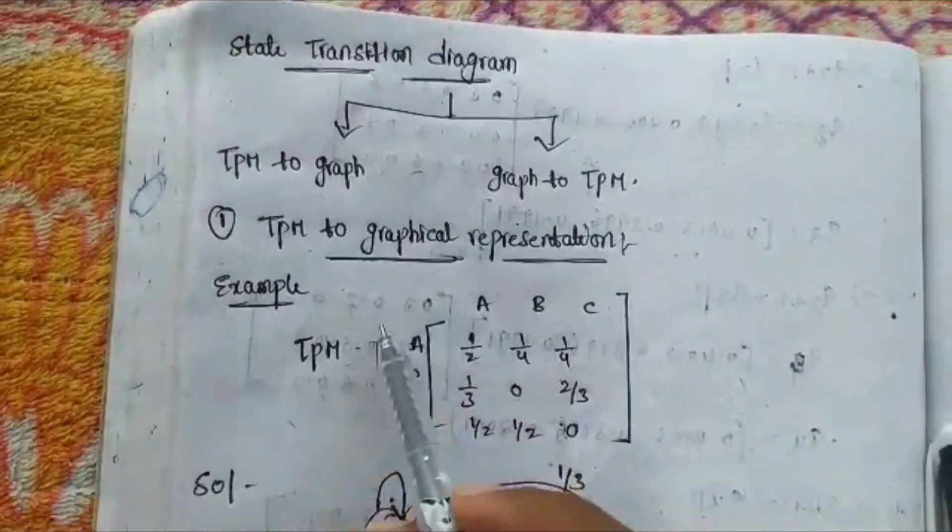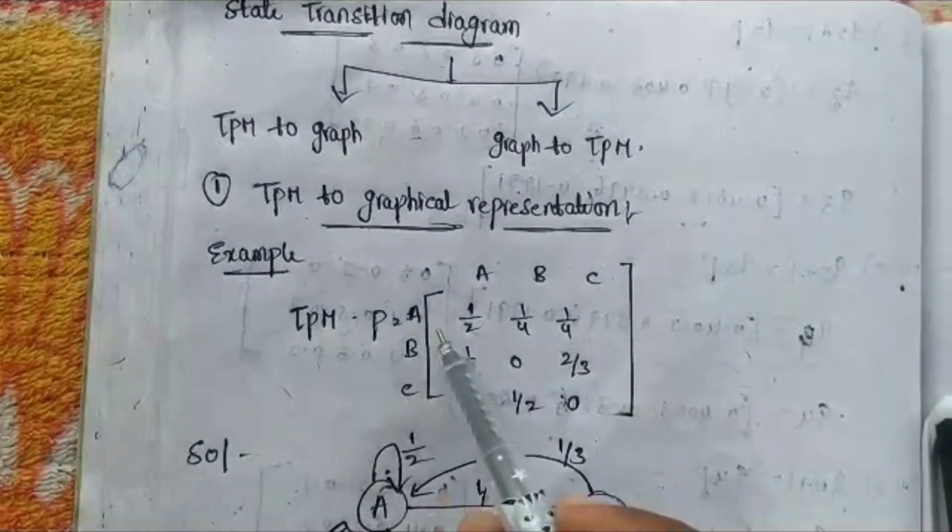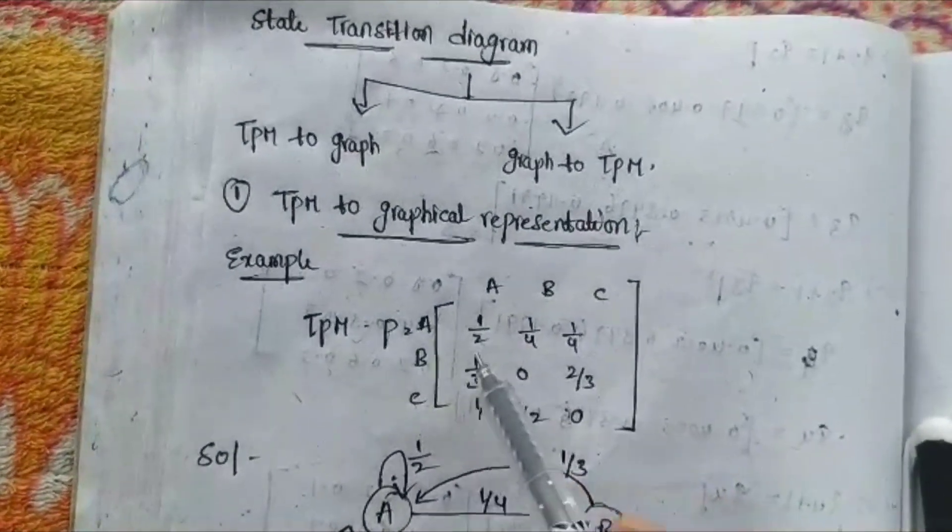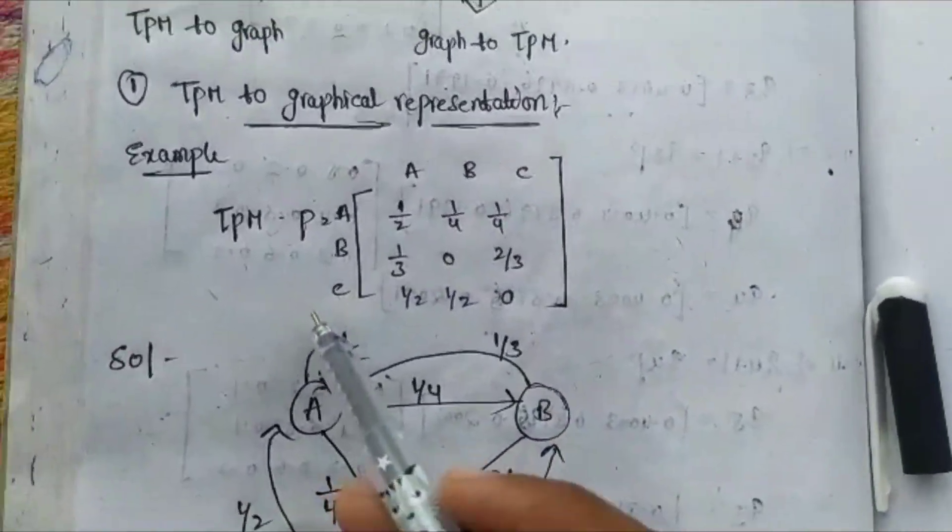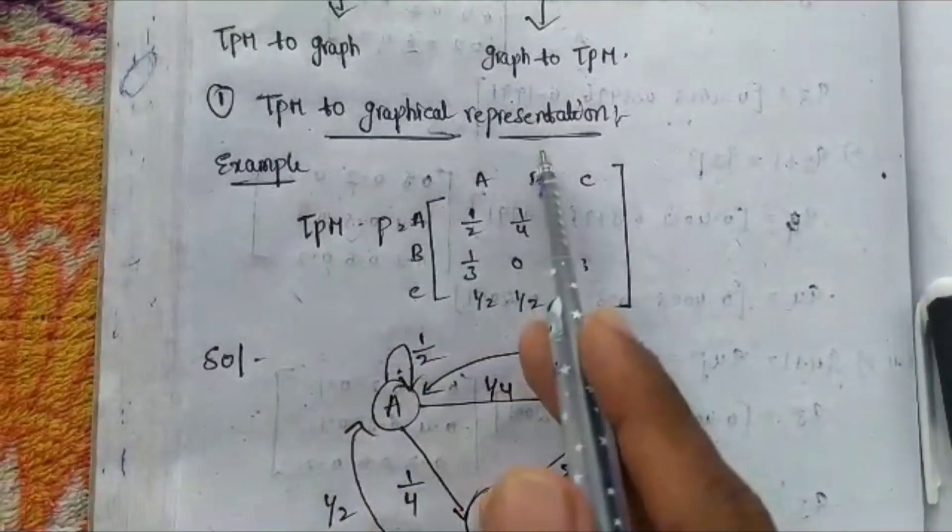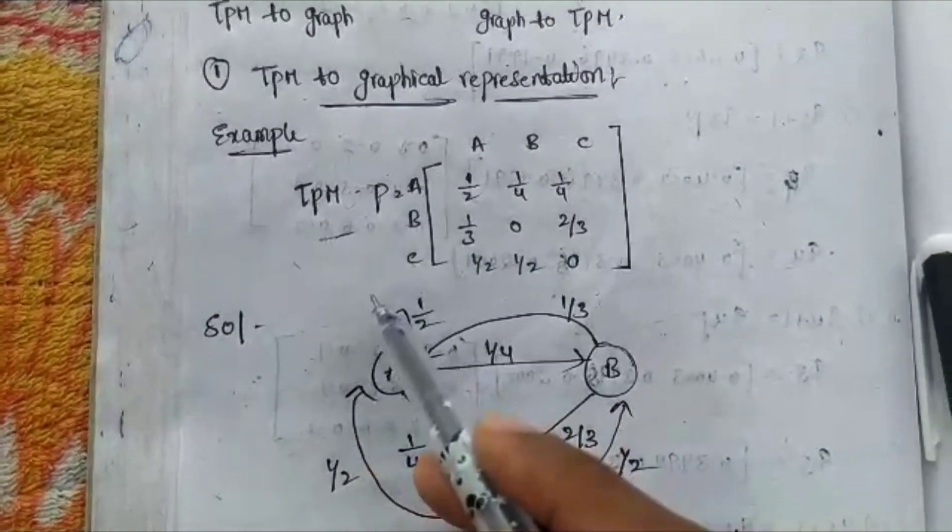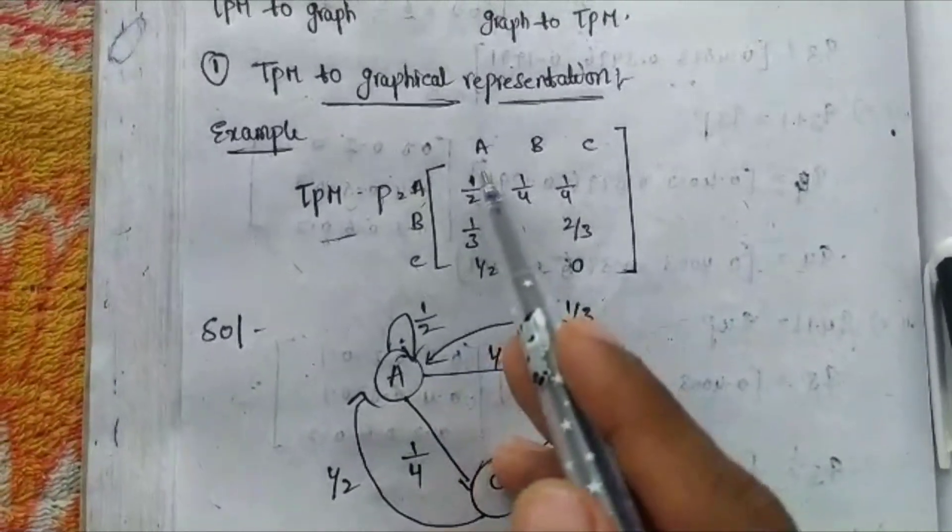Let us take the transition probability matrix to graphical representation. For easy understanding, let's take an example. Here the given TPM P equals ABC matrix with elements. Let us convert TPM to graphical representation.